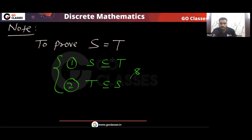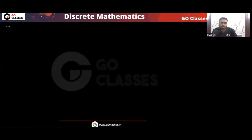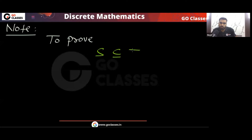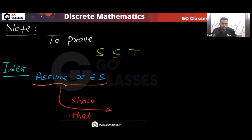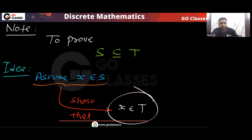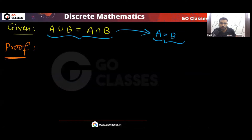To prove S is a subset of T, the method is: assume X belongs to S, then show that X also belongs to T. So assume X belongs to S, then show X belongs to T. Now we are going to apply this same approach here for method number two.